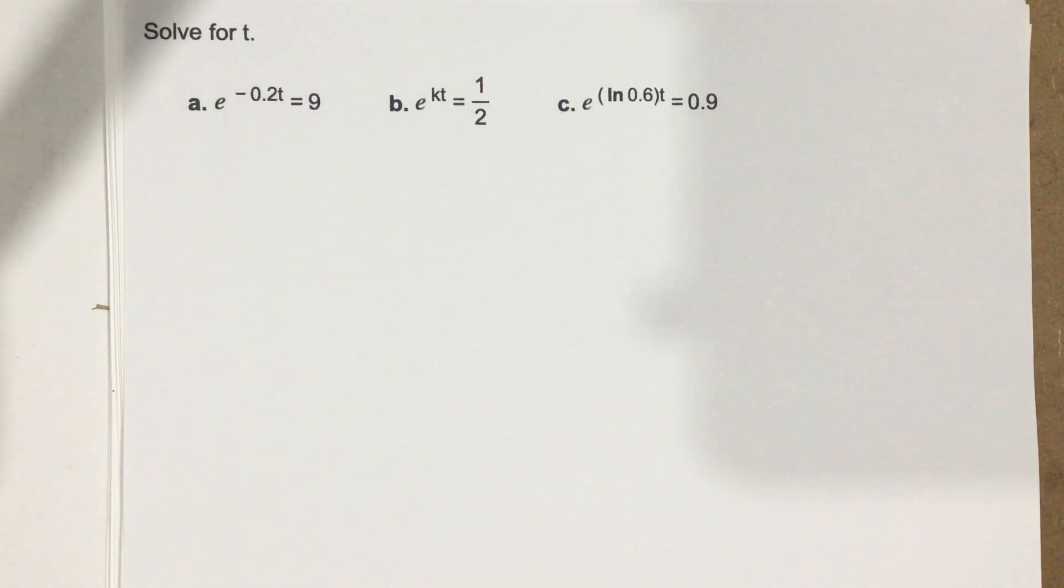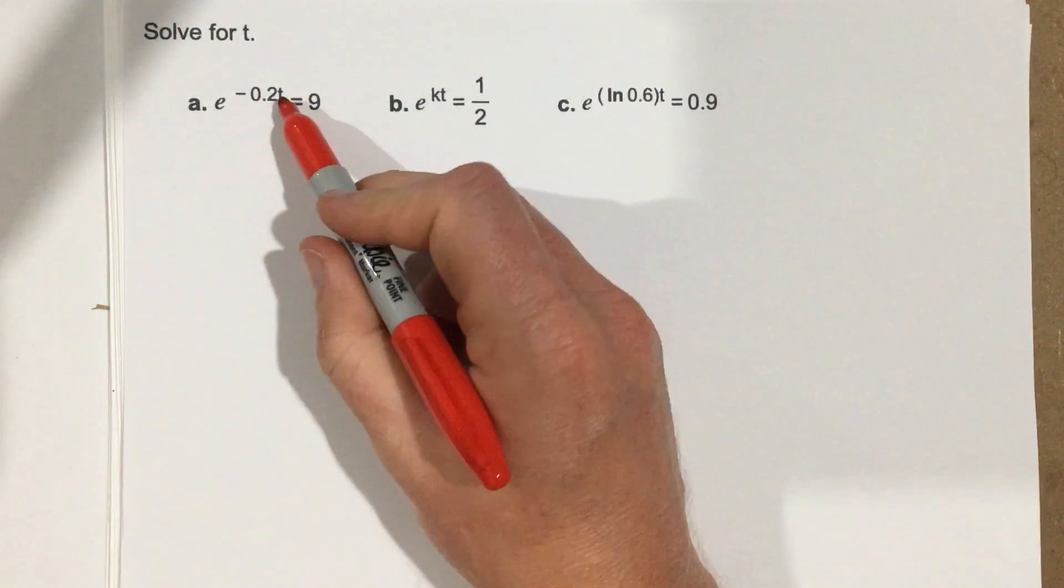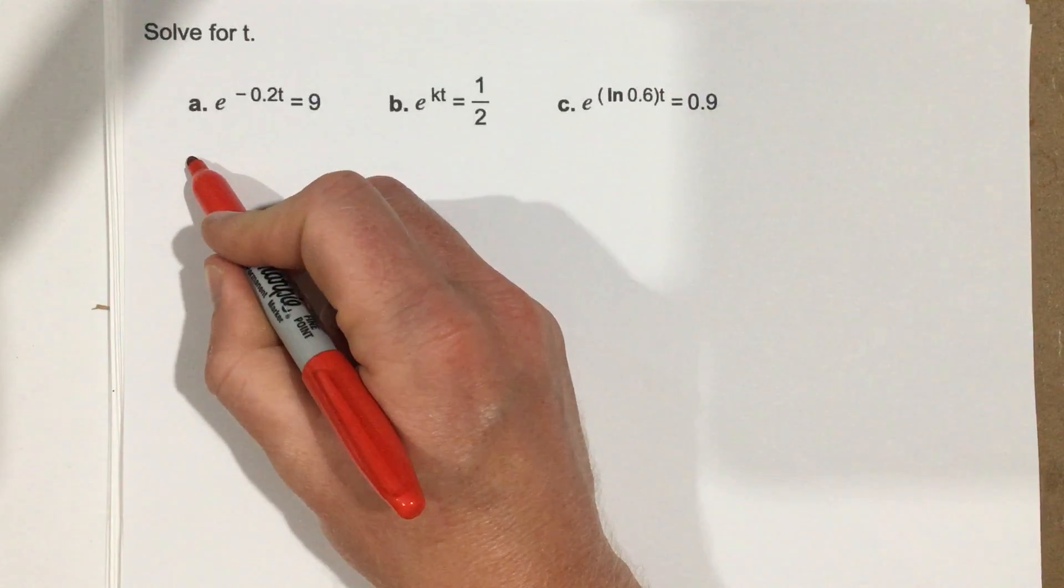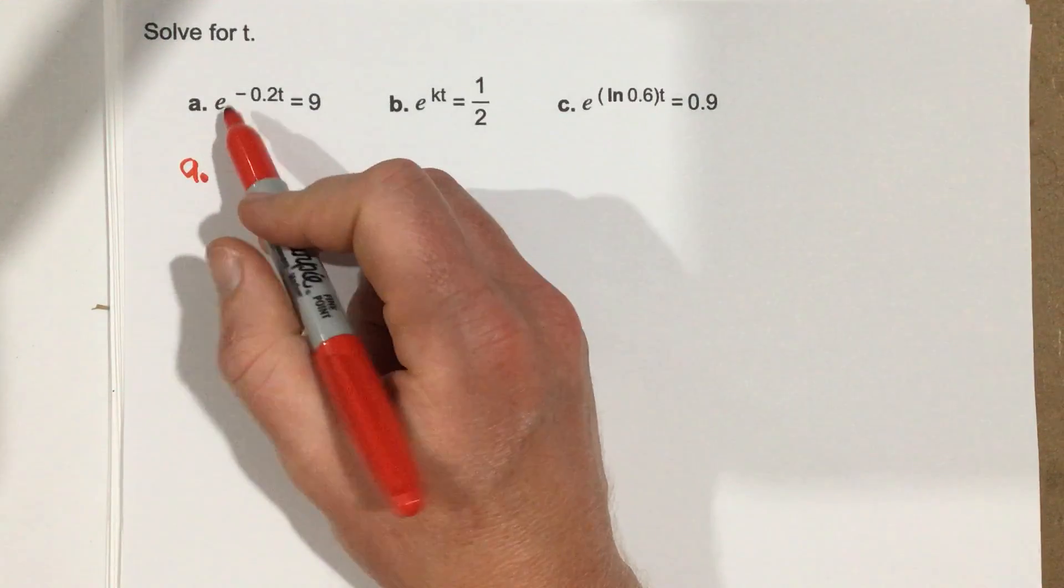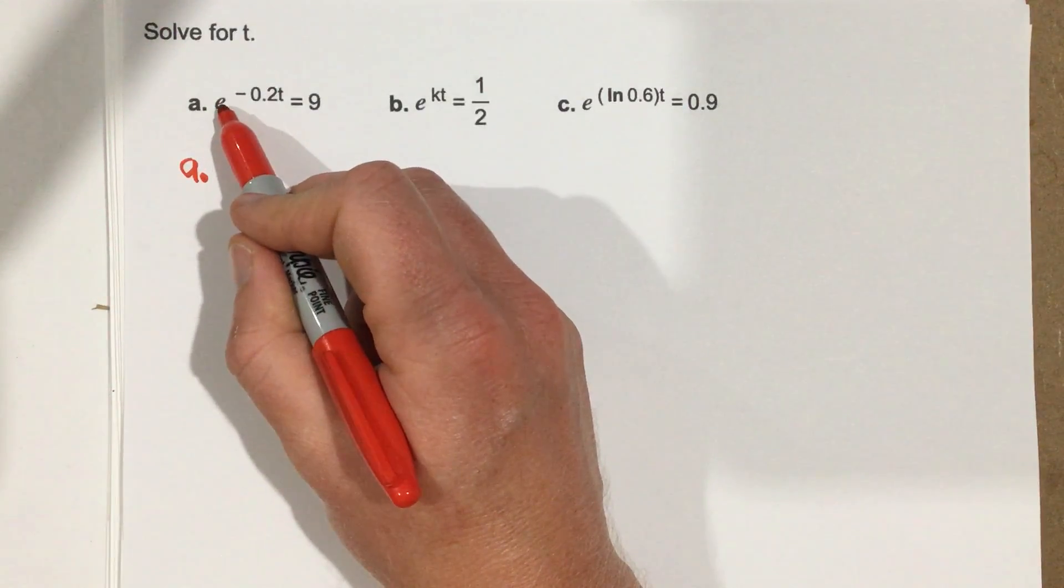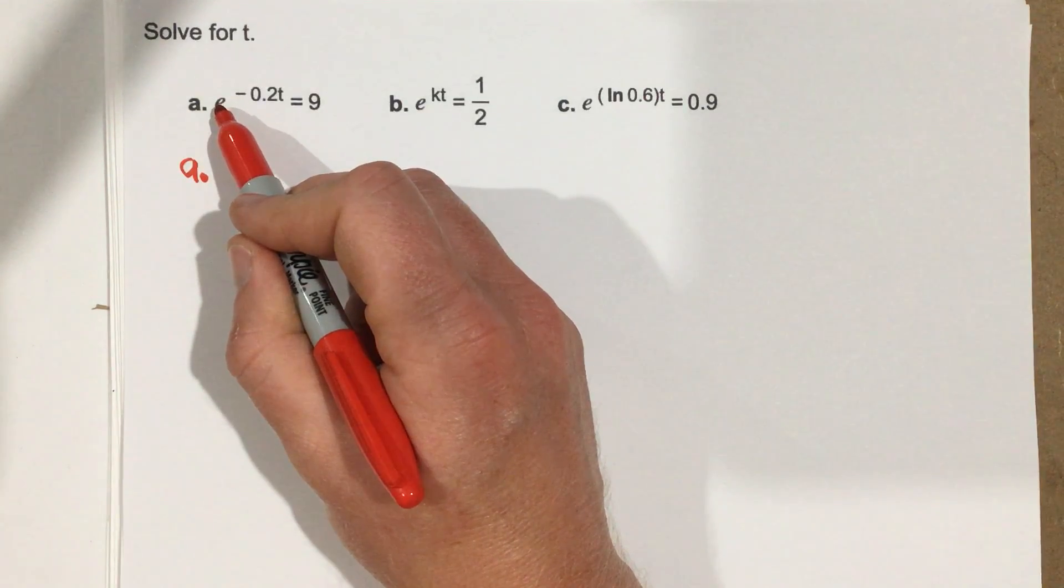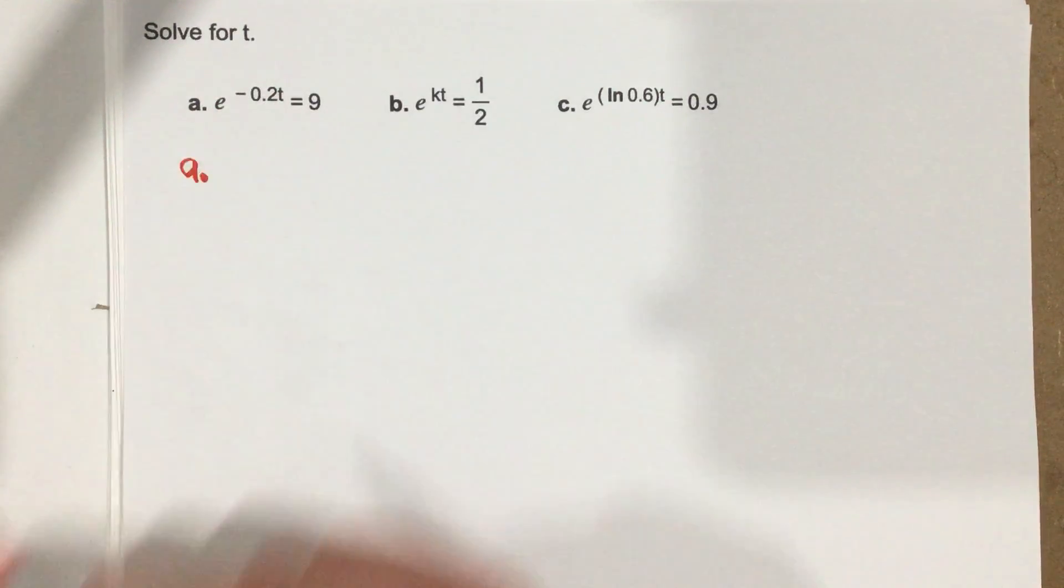What we want to do is get t by itself. Our goal here is to essentially cancel out this e, this base of e, so that we can get t out of the exponent.